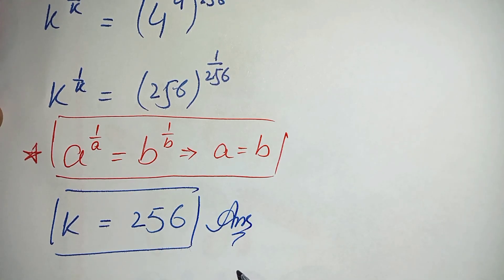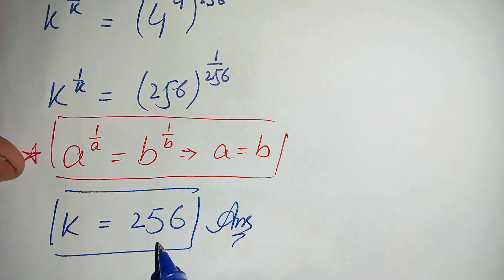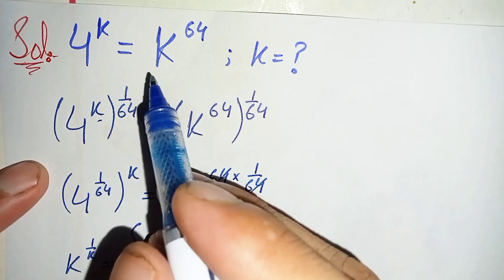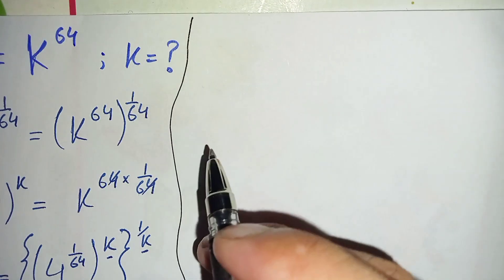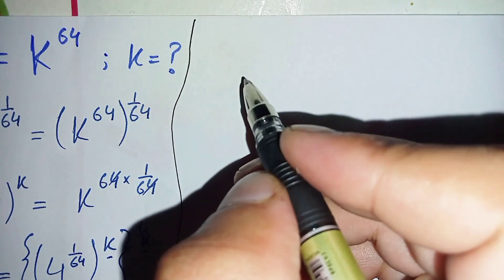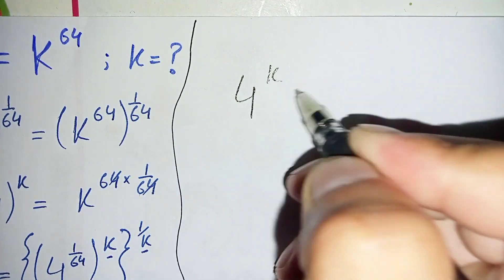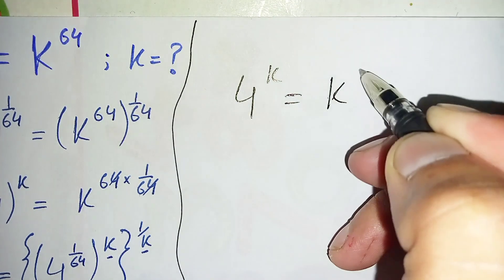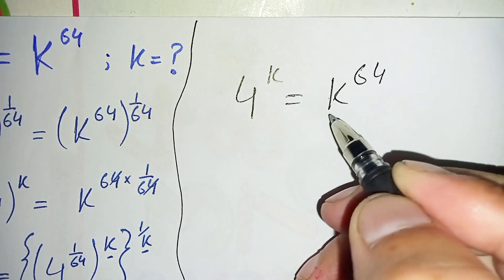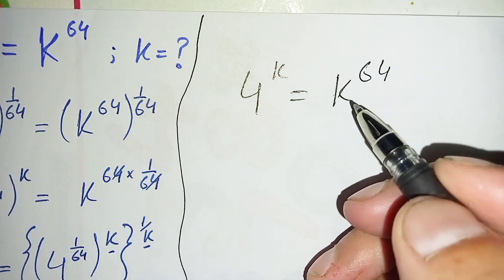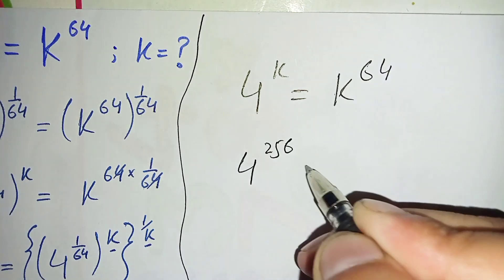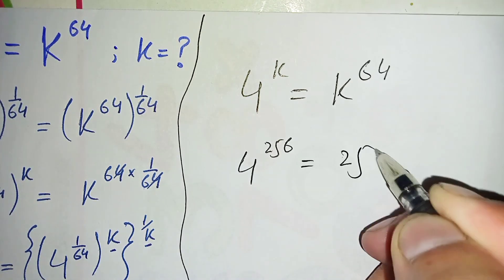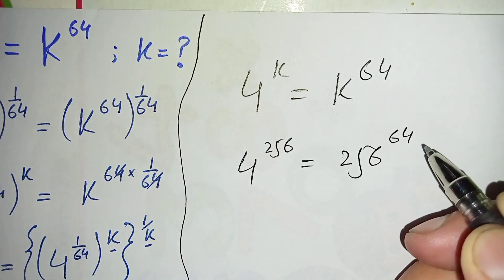Now we will verify that k equals 256 is the exact and correct value. We write the original exponential problem: 4 raised to power k is equal to k raised to power 64. Substituting k equals 256, this becomes 4 raised to power 256 is equal to 256 raised to power 64.